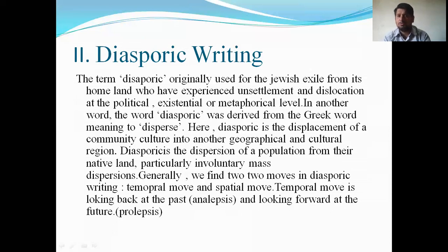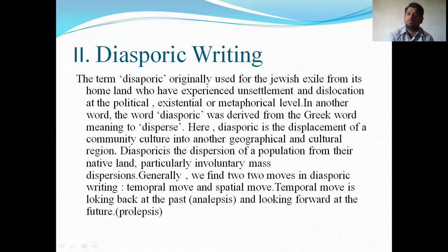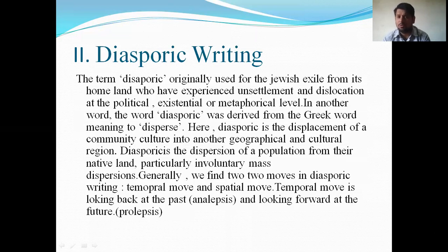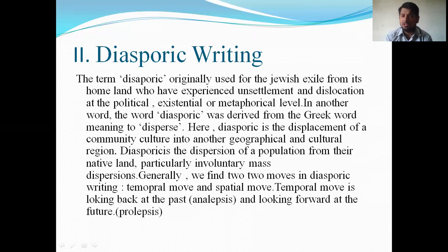Another concept is diasporic writing — a new concept evolved after the modernism and post-modernism era. The term 'diasporic' was originally used for the Jewish exile from its homeland, describing experiences of settlement and dislocation at the political, existential, or metaphorical level. The word 'diaspora' was derived from the Greek word meaning 'to disperse.' Diasporic writing refers to the displacement of a community and culture into another geographical and cultural region — the dispersion of a population from its native land, particularly involving involuntary mass dispersal.